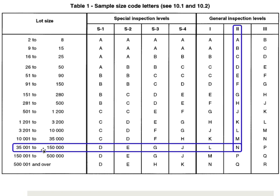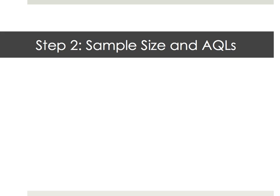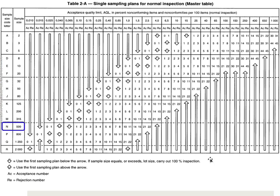The first step is to get the code letter from the first table. You bought 40,000 pieces, so it falls in this interval. We say level 2, so the letter is N — very easy. The second step is to go to another table and get the sample size. The code letter is N, so your sample size is 500.